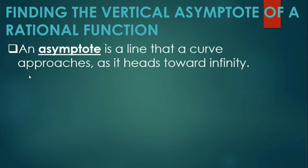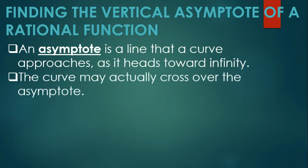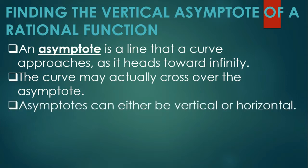An asymptote is a line that a curve approaches as it heads toward infinity. Isa siyang imaginary line na ang ating curve, ang graph ng ating rational function, ay slowly approaches pero never niyang natatouch. The curve may actually cross over the asymptote — yung horizontal asymptote ay pwedeng i-cross ni graph. Asymptotes can either be vertical, horizontal, or oblique.